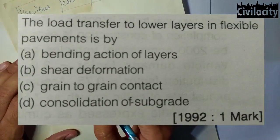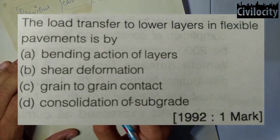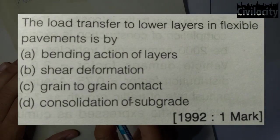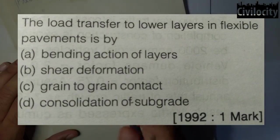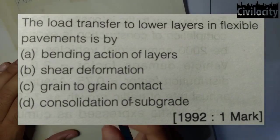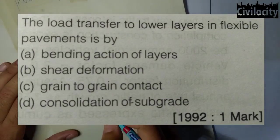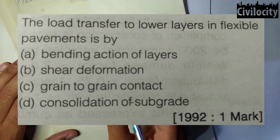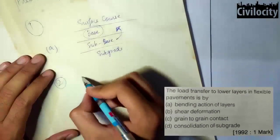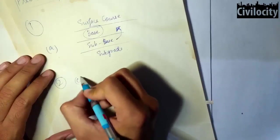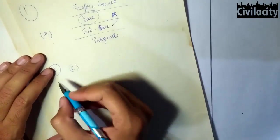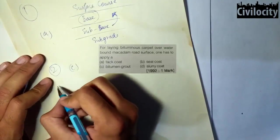Our second question: the load transfer to lower layers in flexible pavement is by what mechanism? The load from the pavement is transferred to the bottom by grain-to-grain contact, so option C is the correct answer.